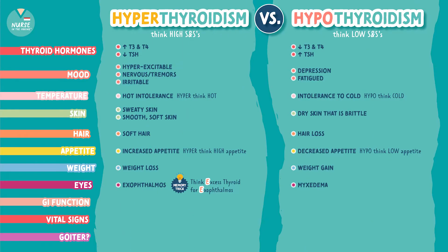As for GI function, in hyperthyroidism we have a hyper GI, so we're going to see diarrhea. In hypothyroidism we have a slow GI, which is why we see constipation.